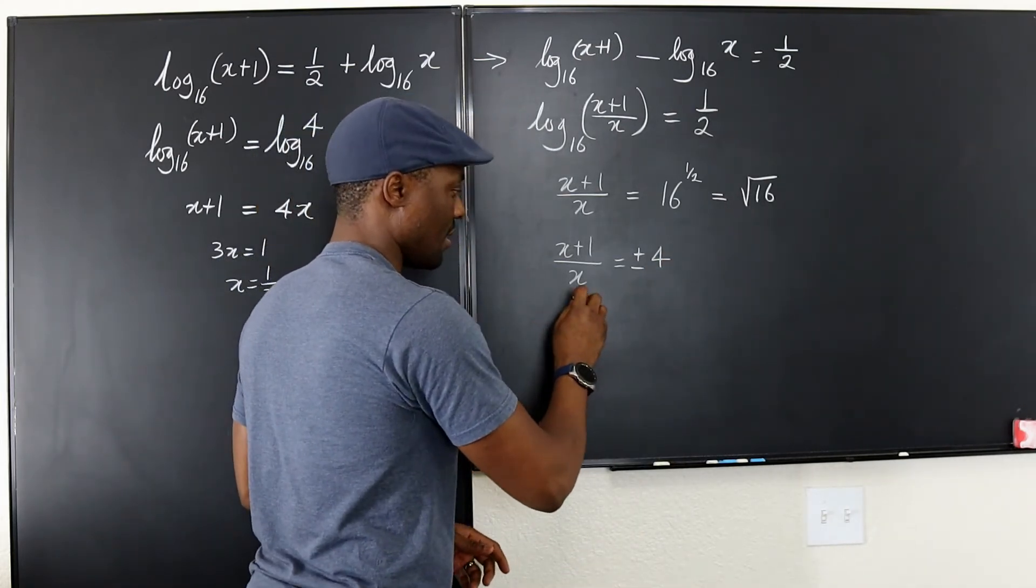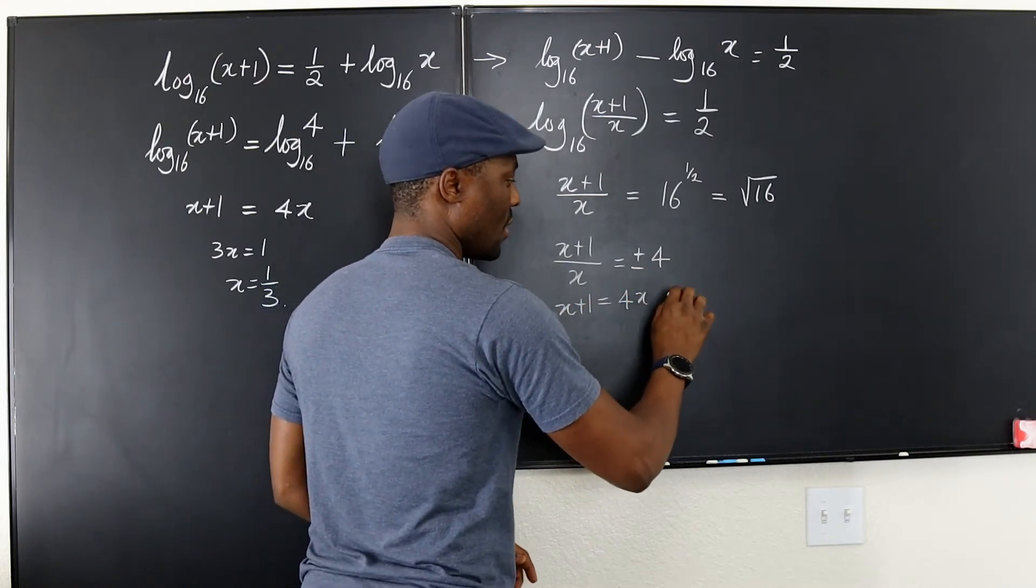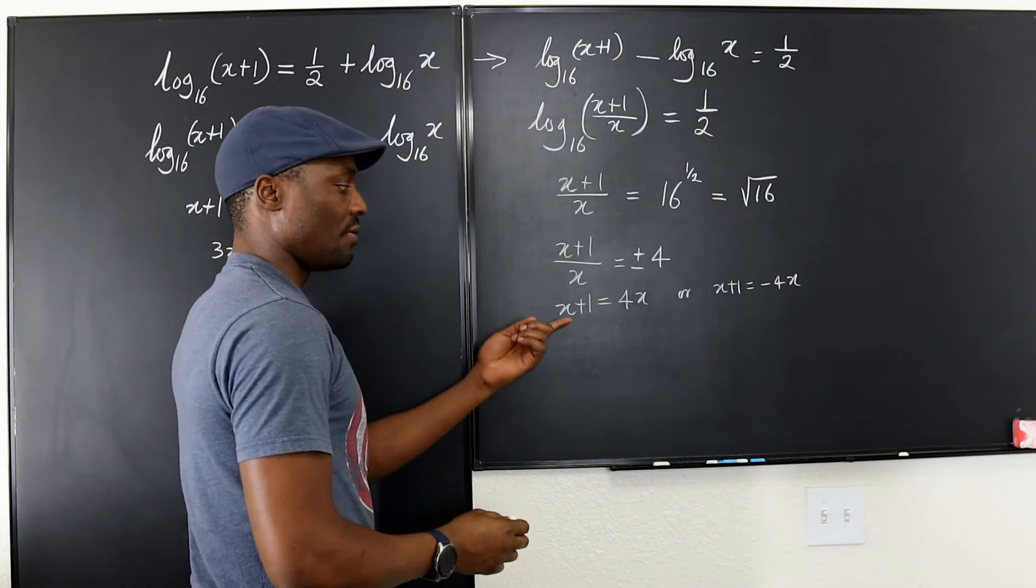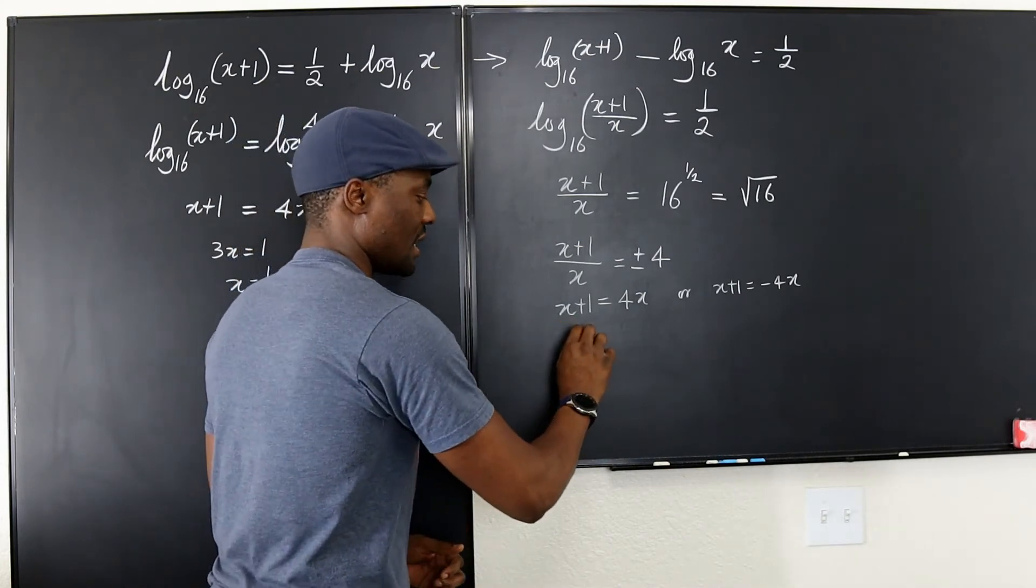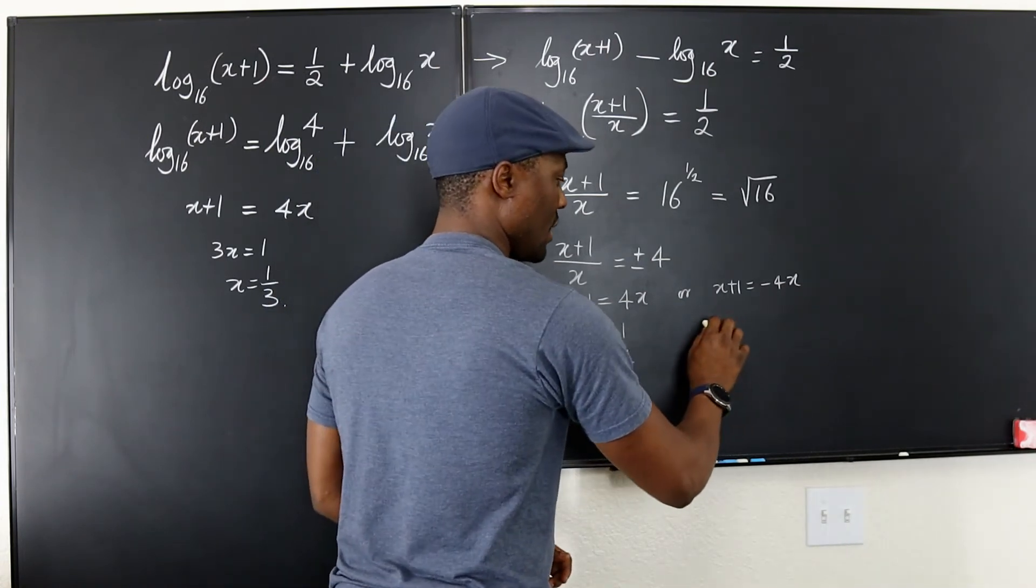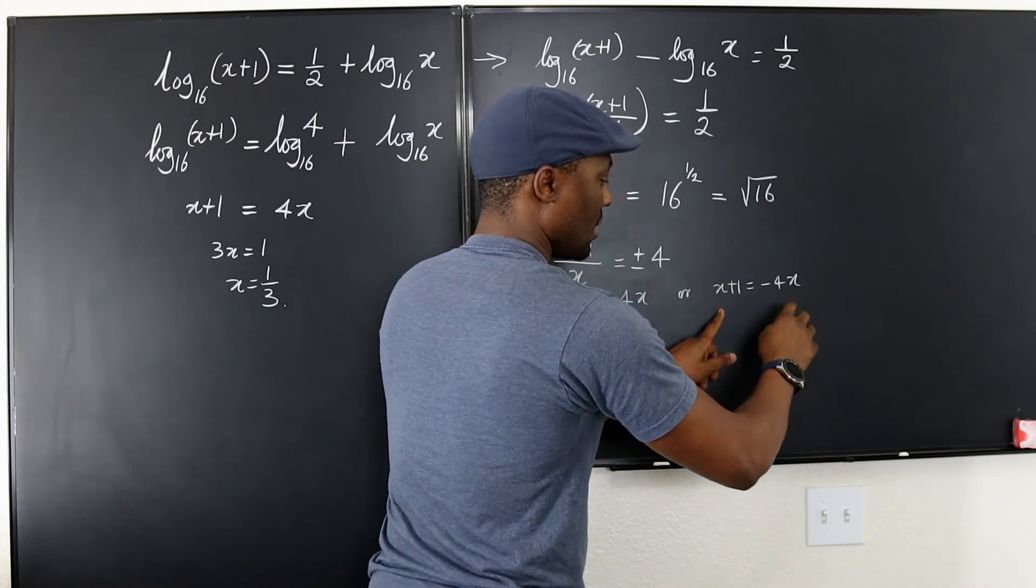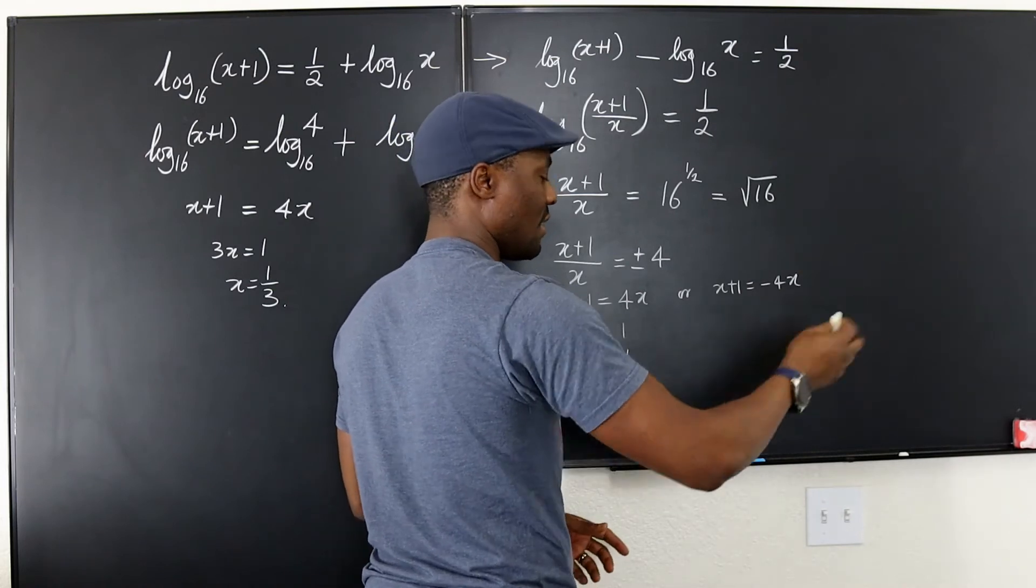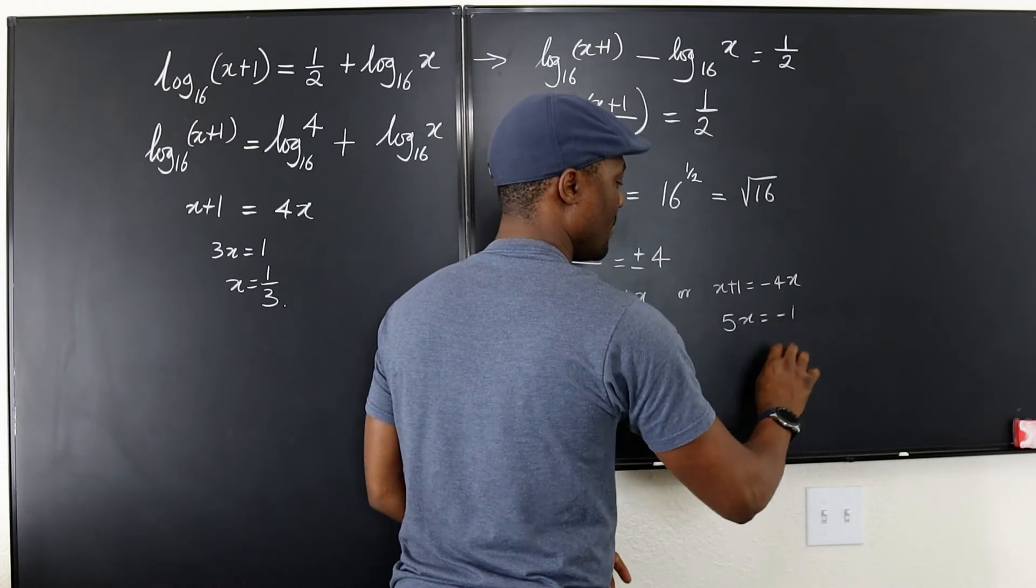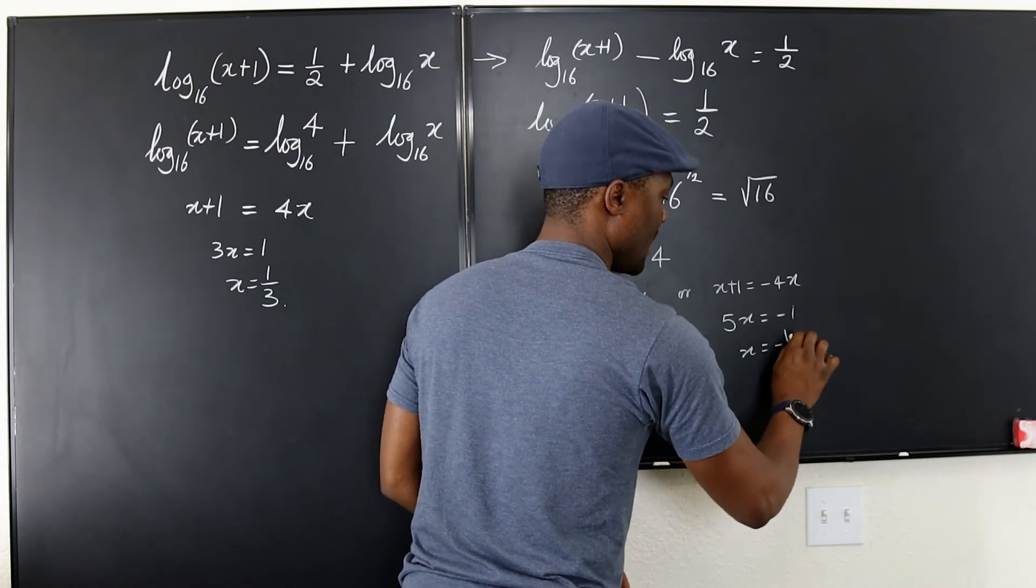So then we're going to have x plus 1 equals 4x or x plus 1 equals negative 4x. So from here, you notice that 3x will be equal to 1 and x will be 1 over 3. Or you're going to have, if you bring this here and take this to the other side or whichever, whatever you do, you're going to end up with 5x equals negative 1 and x is negative 1 over 5.